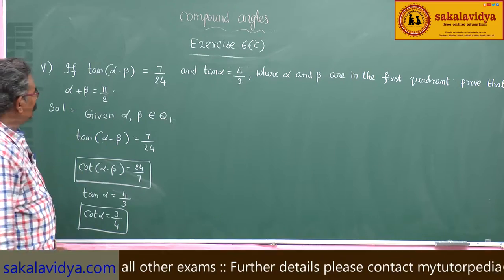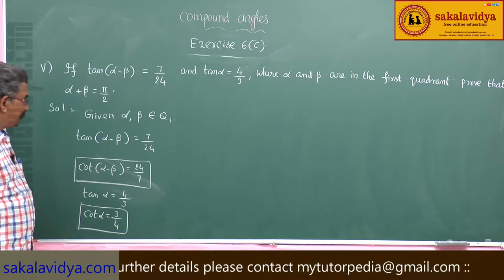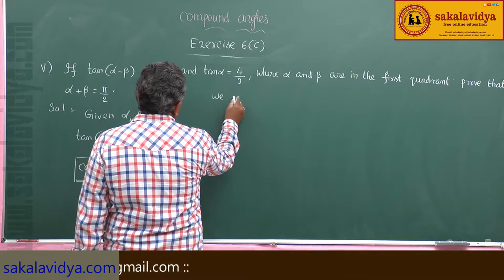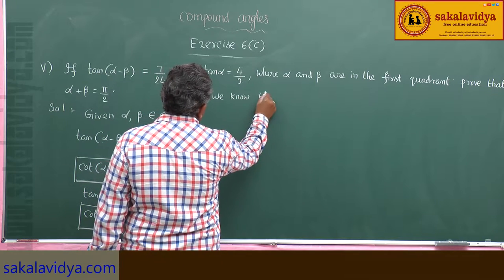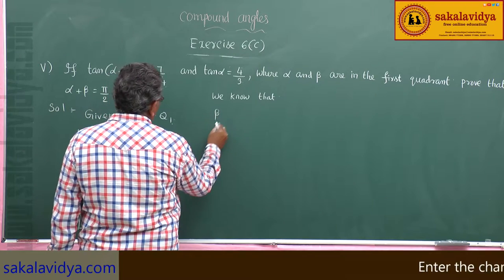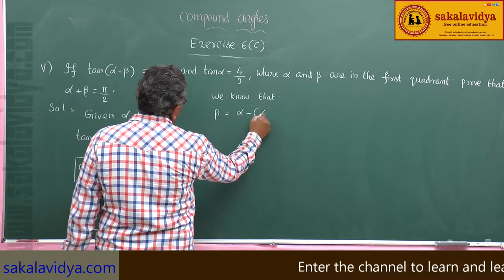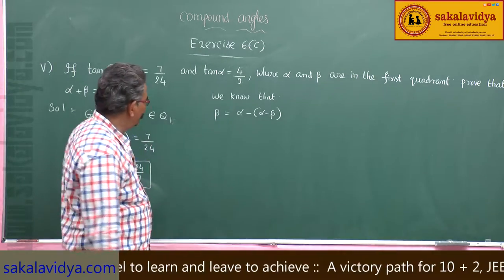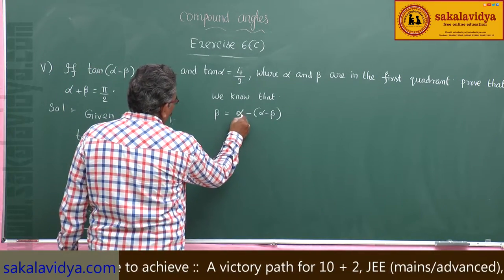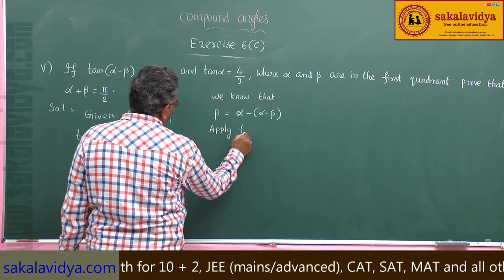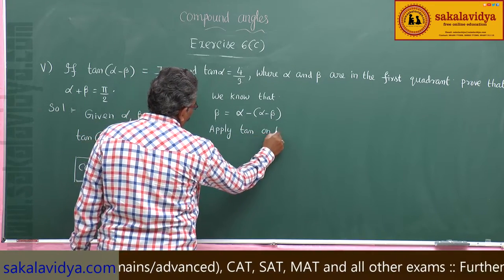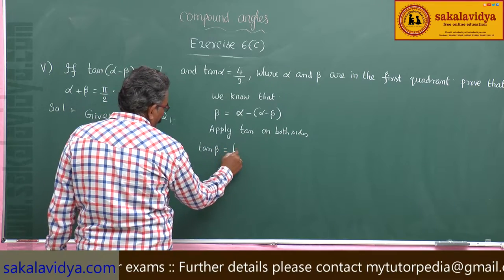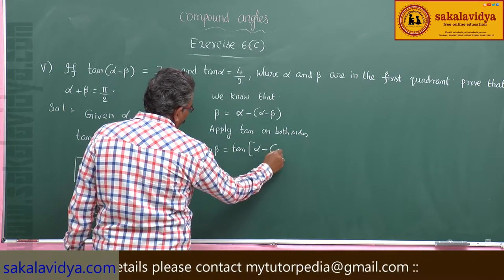Our aim is to find tan β. We observe that β can be written as α - (α - β), since the α terms cancel and we get β. Now applying tan on both sides, tan β = tan[α - (α - β)].